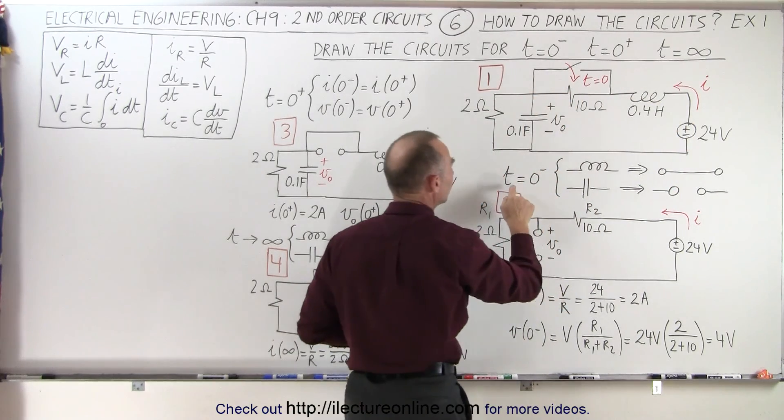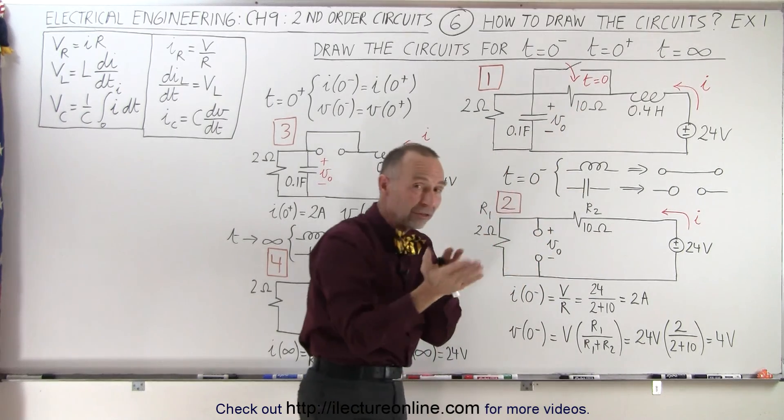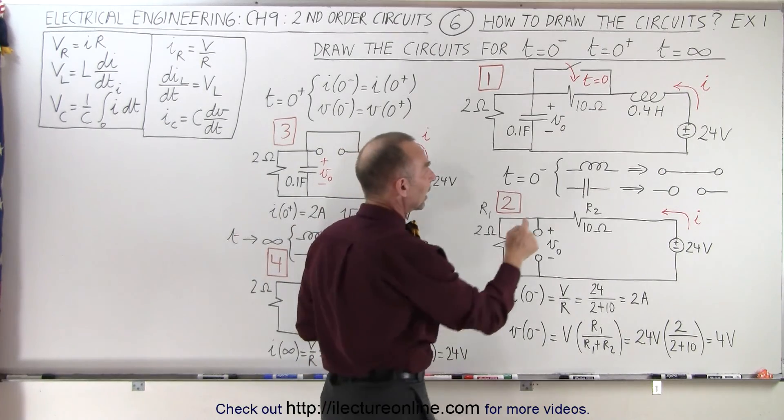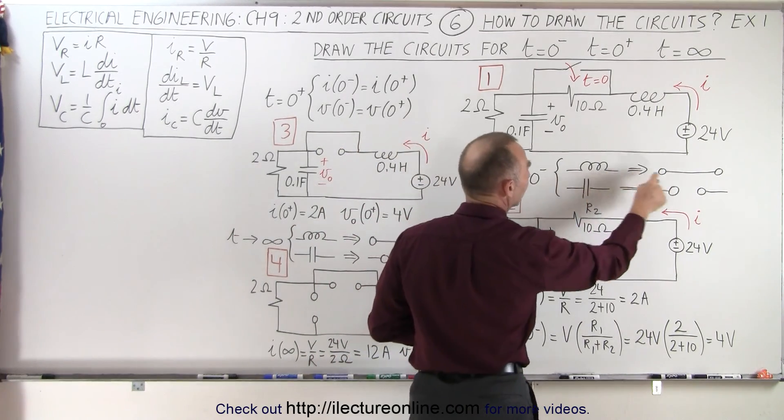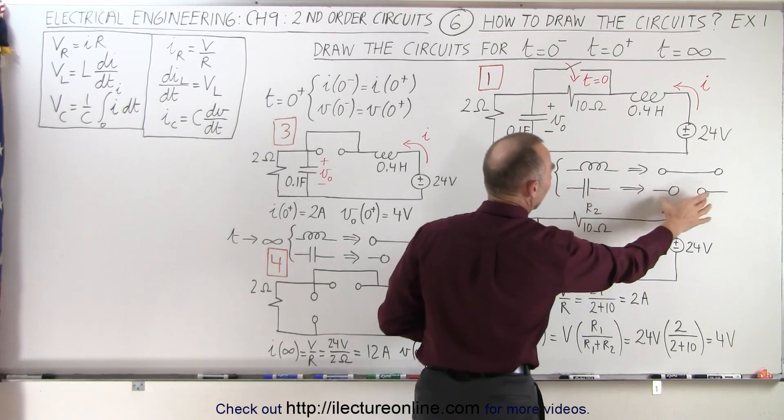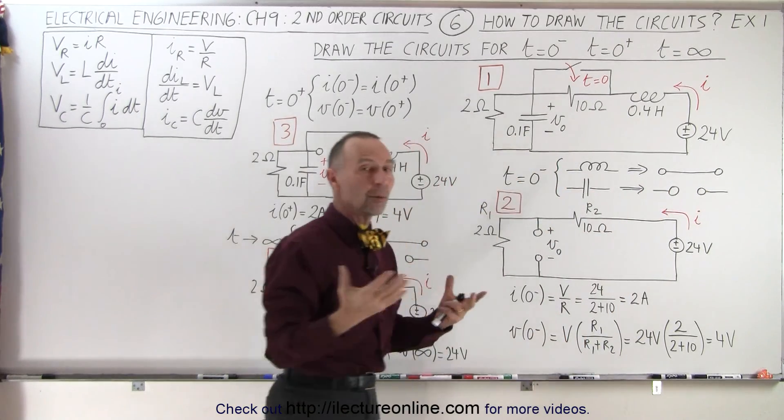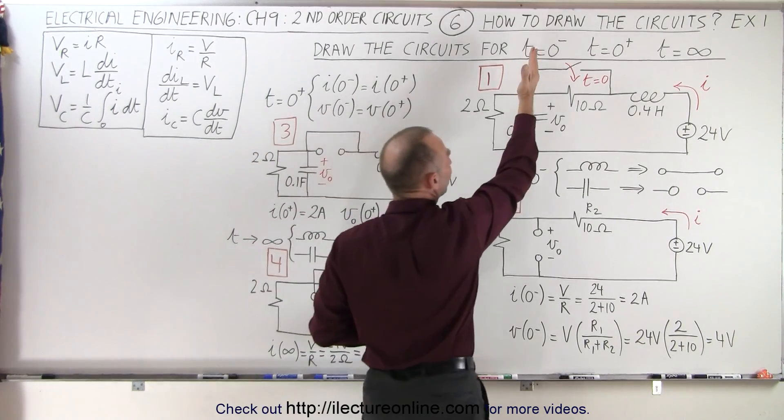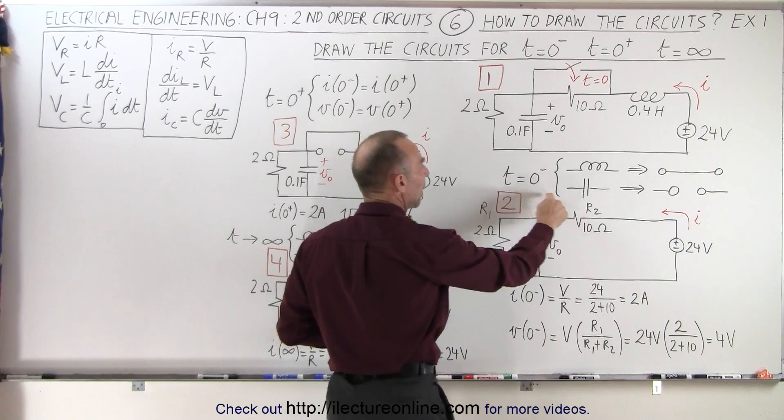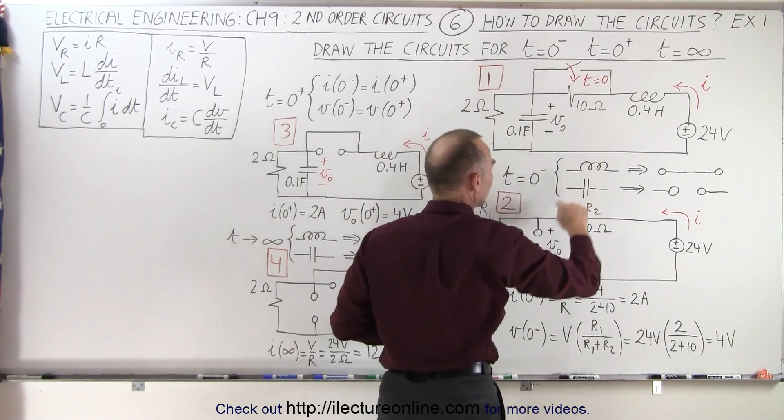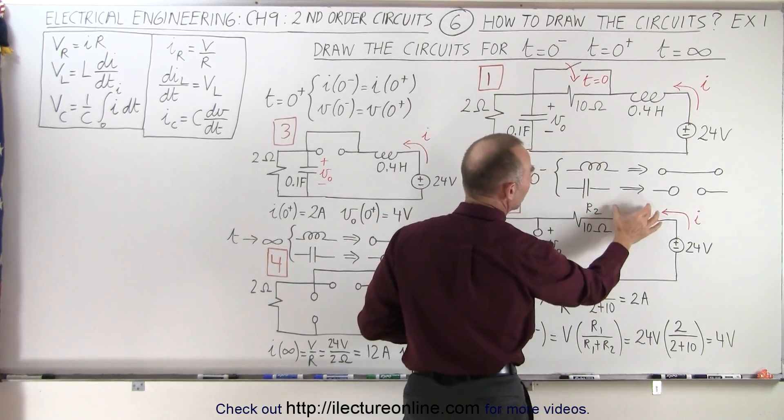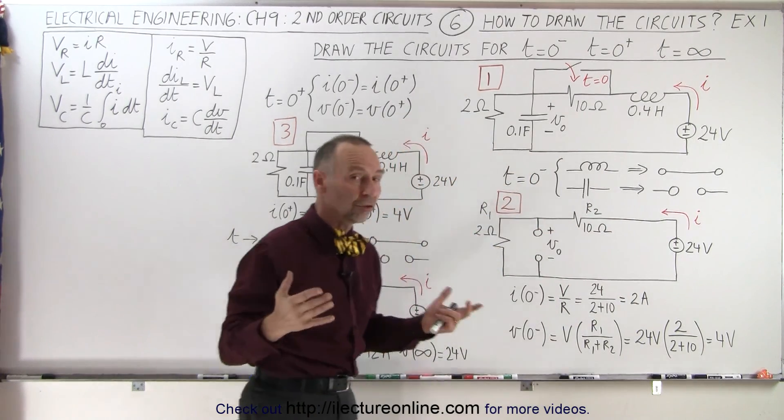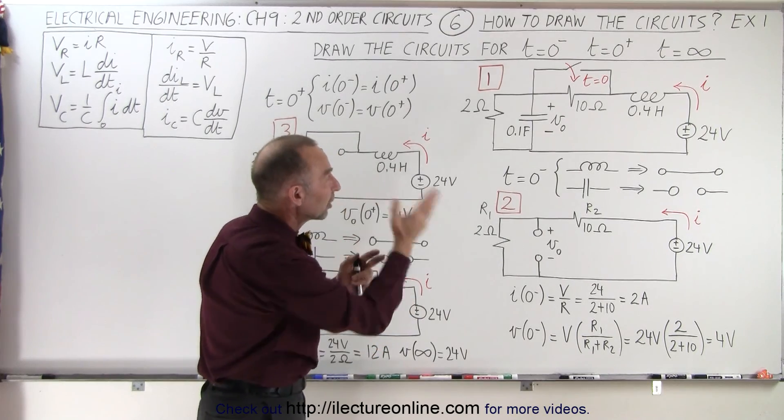Notice that when you are approaching the event right before the switch is closed, we can say that there's been a steady state condition and at that point the inductor will act like a short and a capacitor will act like an open. So the first thing you want to do is represent the circuit right before the event happens, in this case right before the switch closes. So you can see there's no path to this branch right here, so we can just ignore it. Notice that the inductor is now being replaced by a short and the capacitor is now being replaced by an open.